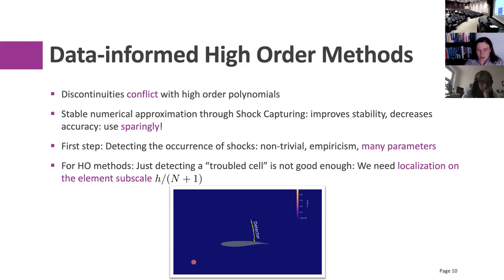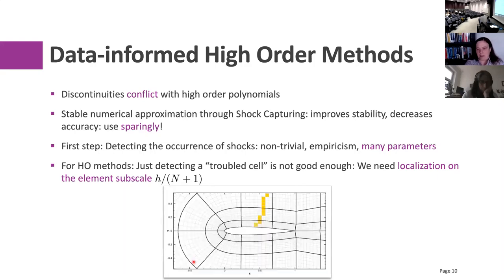For high-order methods that give these nice multi-scale resolution pictures, just knowing which element the shock is in is not enough. We have these large elements, and what you actually want to know is where within an element — at the sub-scale level — the shock is located, so we can apply shock capturing very precisely. There are two approaches: discretization-based shock capturing, where you switch from a high-order DG scheme to a finite volume scheme right at the shock, or artificial viscosity, where you add a second-order term and smear out the shock.